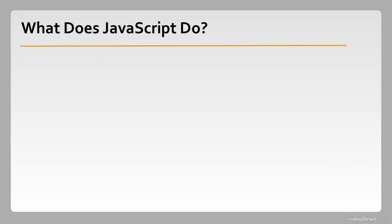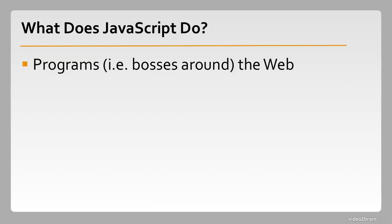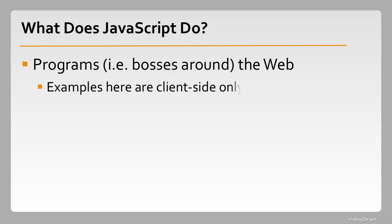So what does JavaScript do? JavaScript is a programming language, and what that effectively means is that it allows you to program — or you could think of it as bossing around — the web. You can use it either to program web browsers, or even to program servers. In this course, we'll be looking at examples and mostly talking about things that are client-side only. But everything you learn about JavaScript in this course would be applicable to programming a web browser, or to working with technologies like Node or other server-side JavaScript environments.